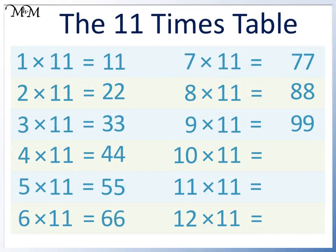To multiply 11 by 10, we simply write 11 and put a 0 on the end. 10 times 11 equals 110.